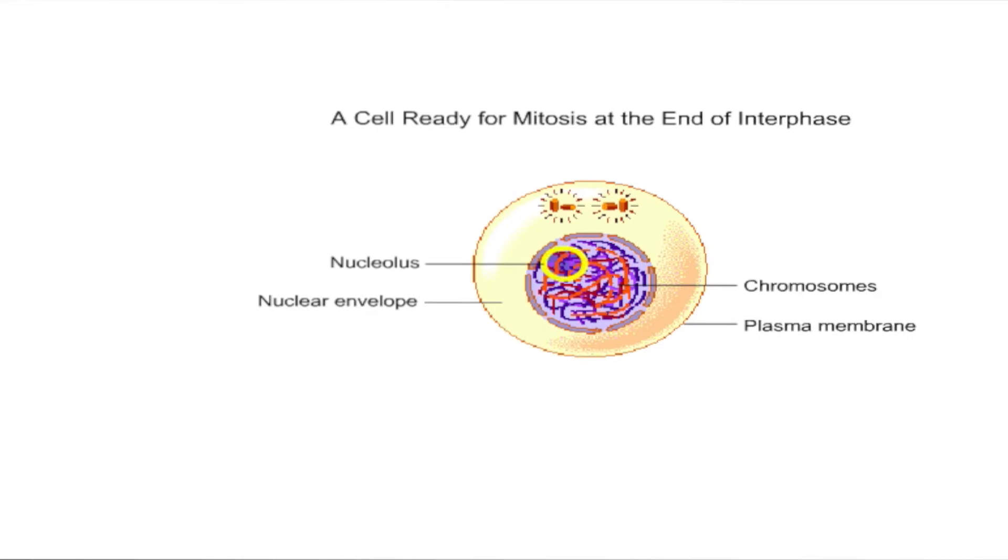Outside the nucleus are two centrosomes produced by duplication of a single centrosome during early interphase. Each centrosome consists of a pair of centrioles. Centrosomes serve as microtubule organizing centers. Microtubules extend from the centrosomes radially to form an aster.